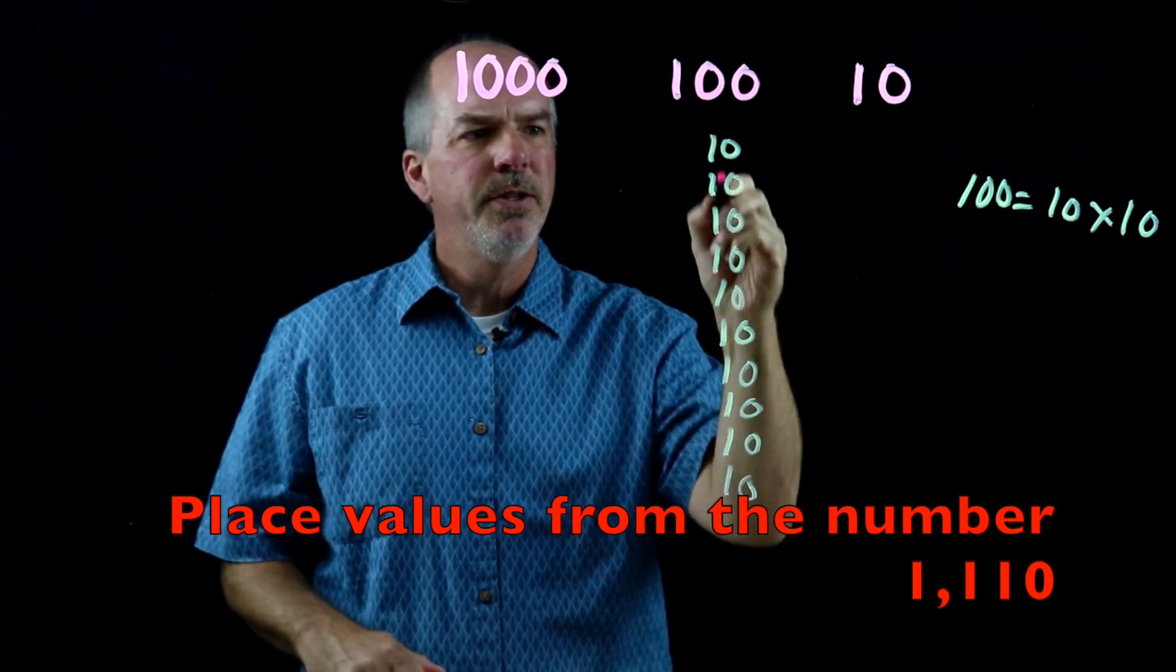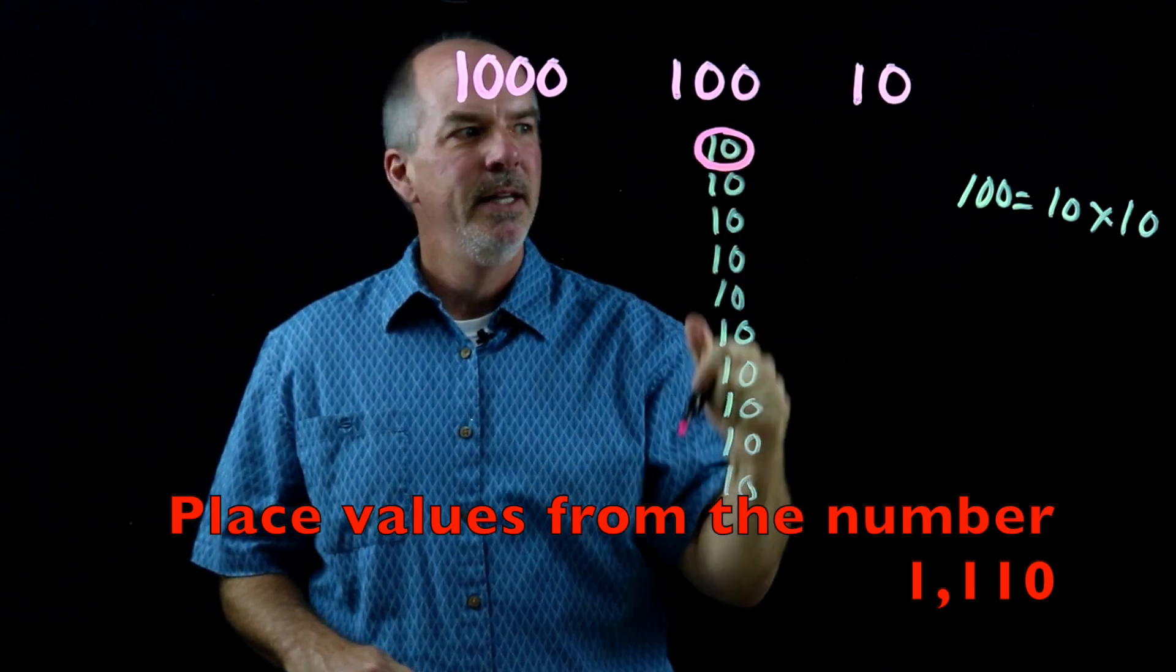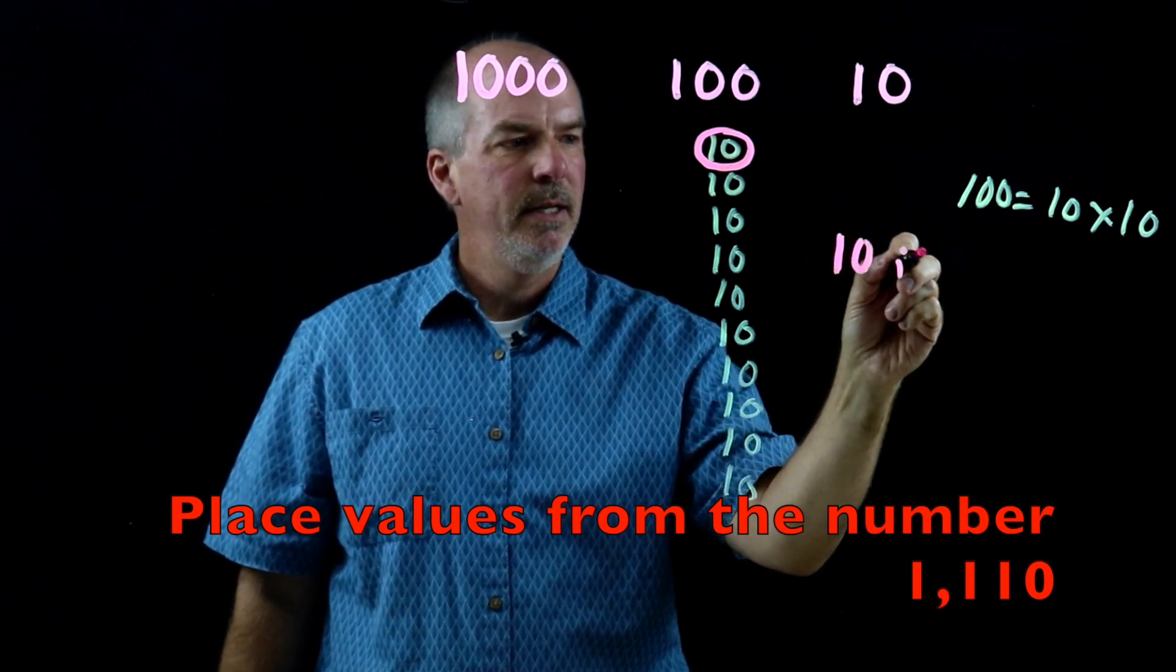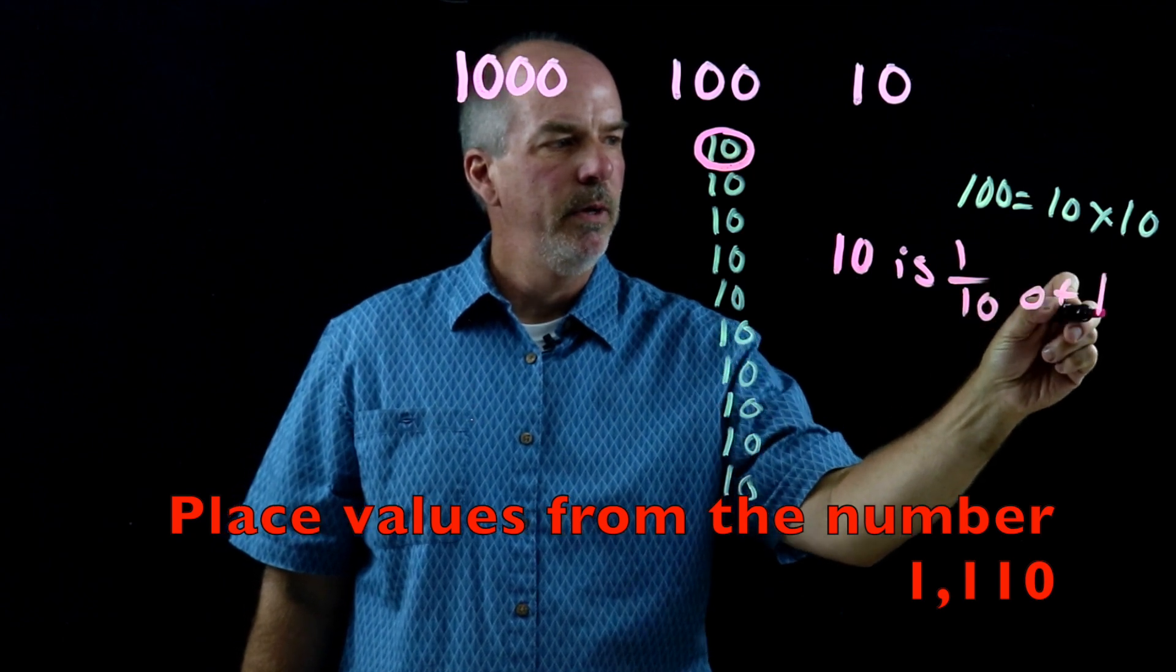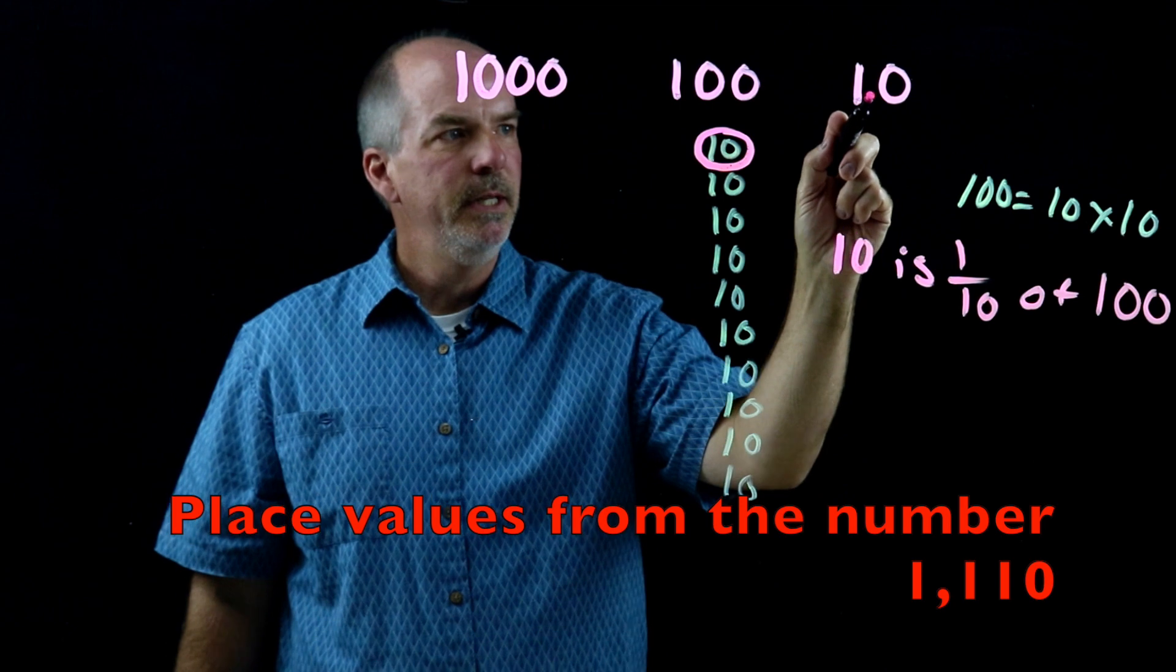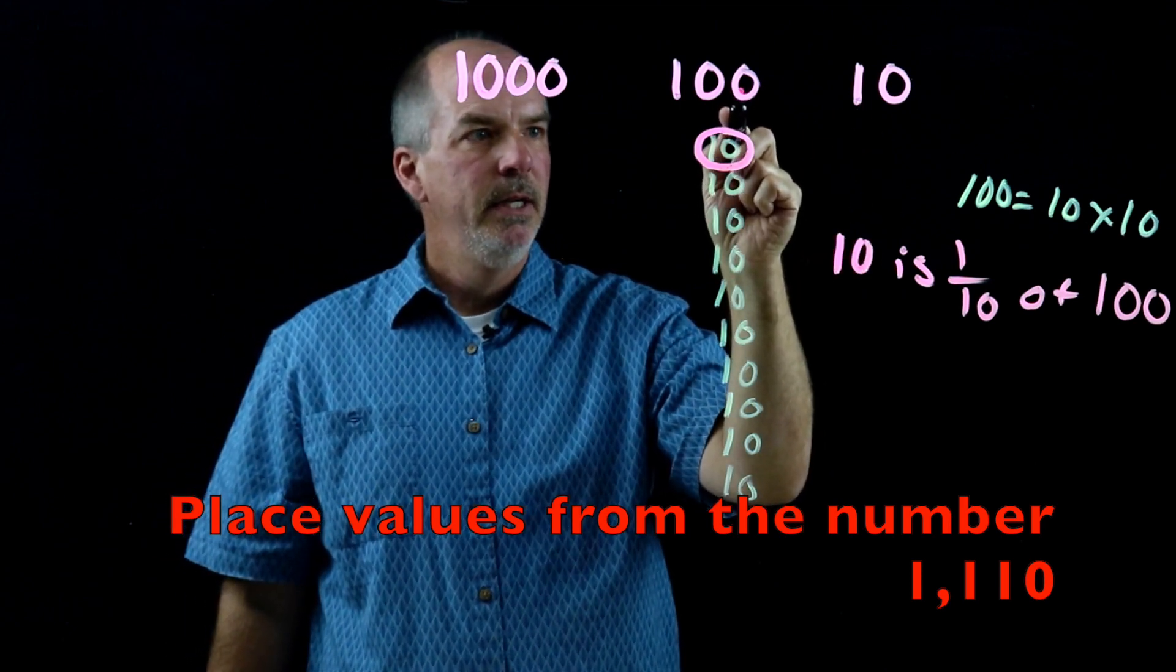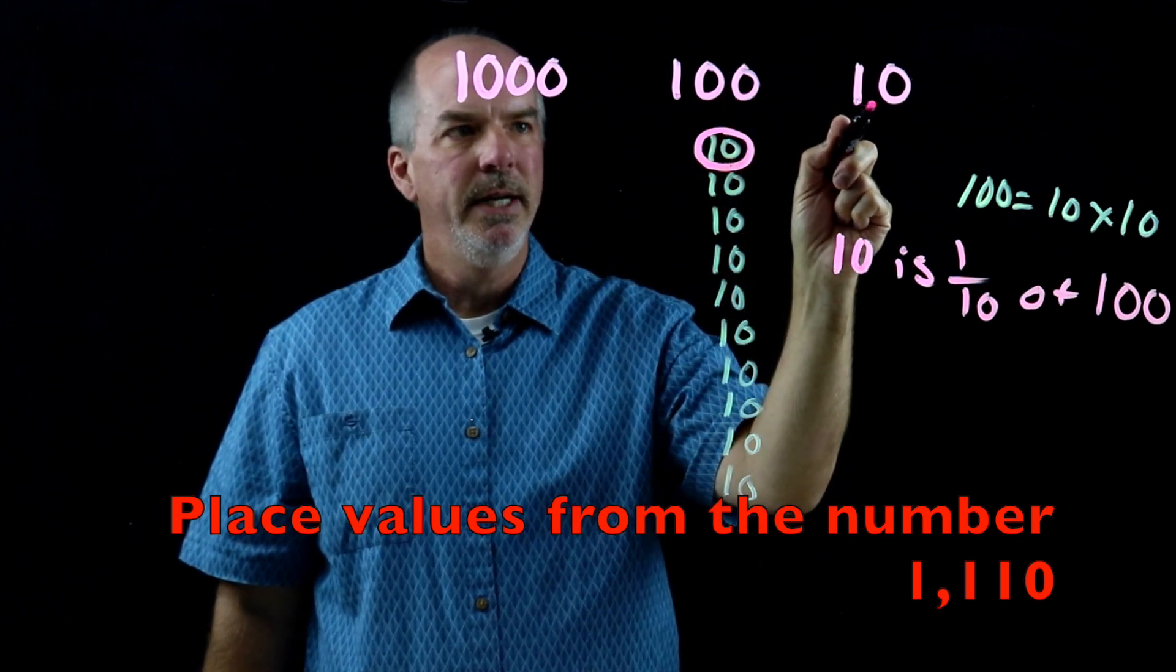But we also, if we circle one of these one-tenth, what do we have? We have ten. So ten is one-tenth of 100. So this digit is one-tenth of the digit to its left. This digit is ten times the digit to its right.